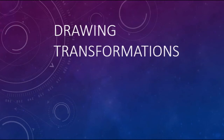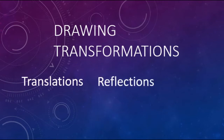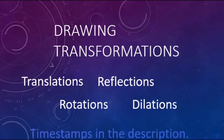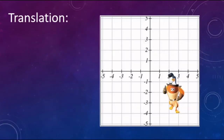Here we're going to be looking at drawing transformations. The four types of transformations we're going to look at are translations, reflections, rotations, and dilations. This might get kind of long, so I'm going to have time stamps in the description so you can fast forward to whichever one you want to look at the most or whatever you're struggling with.